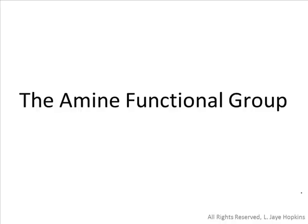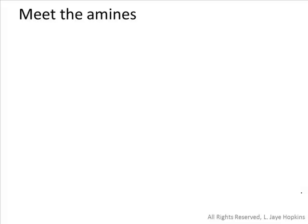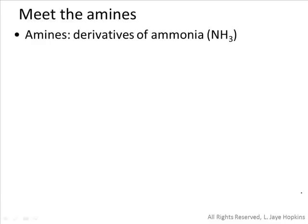In this section, we'll focus on the amine functional group. We've actually met the amine functional group in a previous section when we talked about the amide functional group. We can synthesize an amide by combining a carboxylic acid and an amine. Ammonia, like many molecules containing nitrogen, has nitrogen in a pyramidal arrangement, meaning three single bonds and one electron pair.